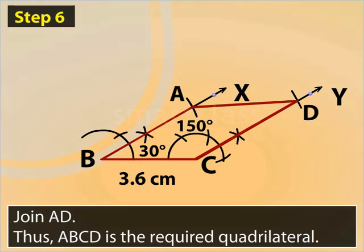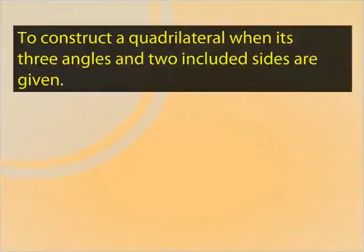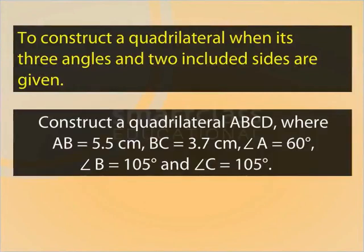Now, let us find a quadrilateral ABCD, where AB is 5.5 cm, BC is 3.7 cm, angle A is 60 degrees, and both angles B and C measure 105 degrees.